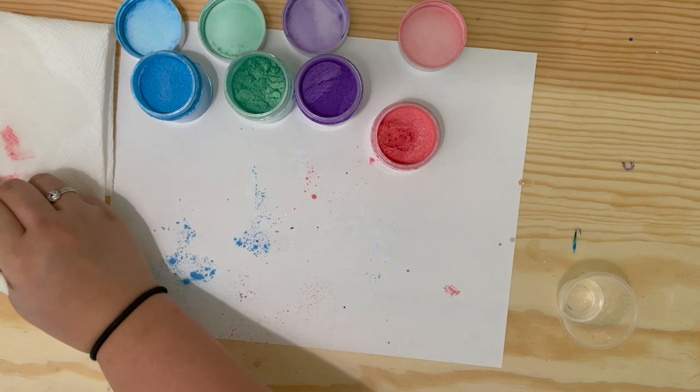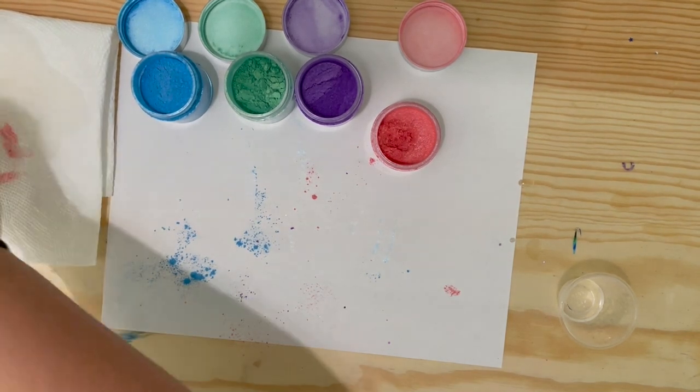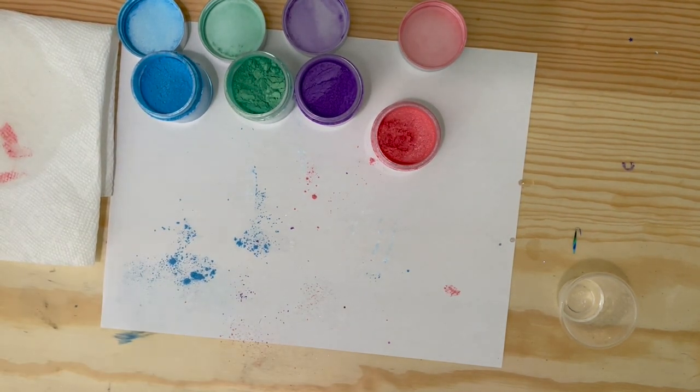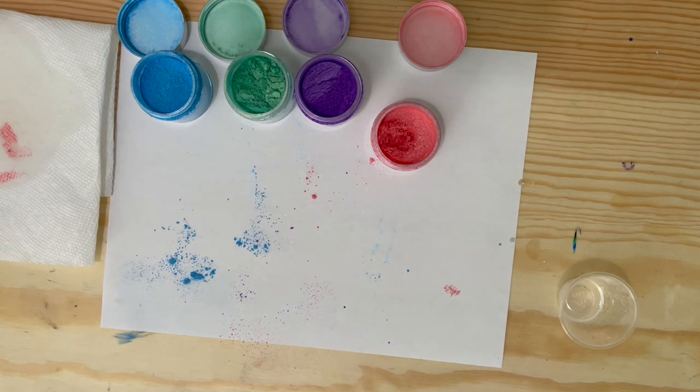But for the mica powders, all you want to do is just make some little swirls, make some lines, use a little bit of pink, blue, green, purple.